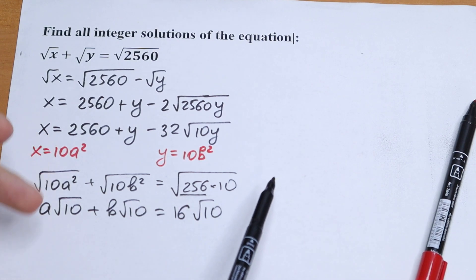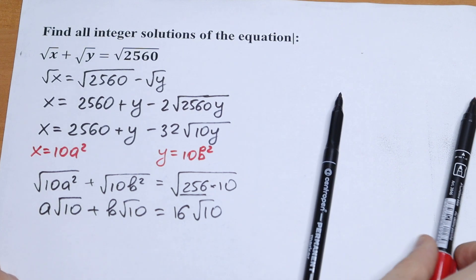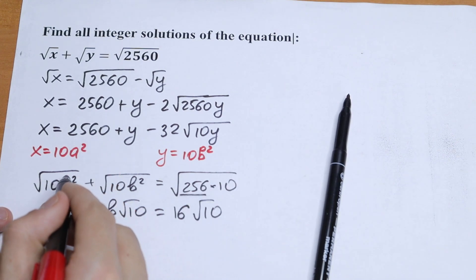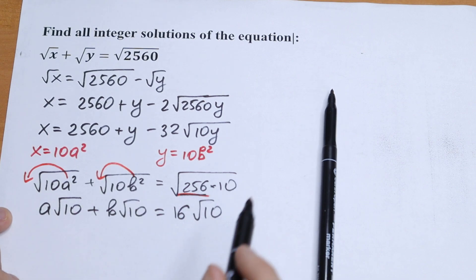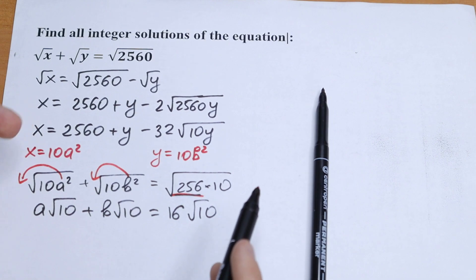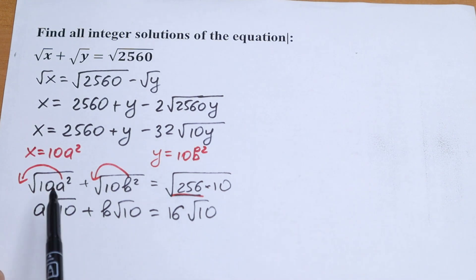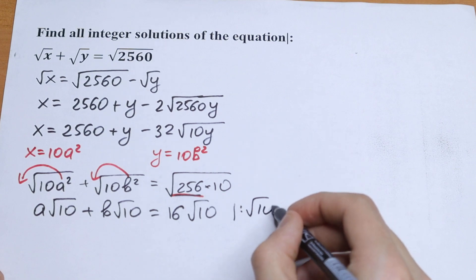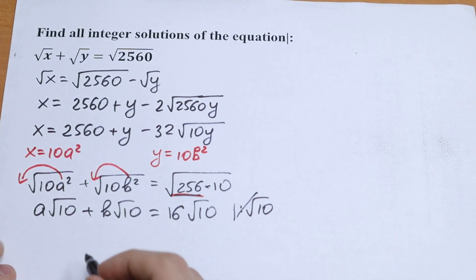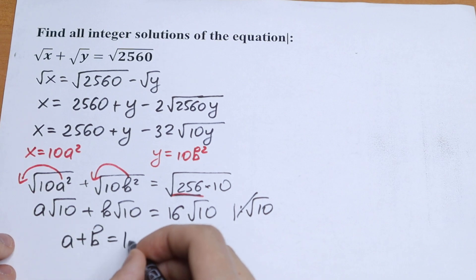After all simplifying, we have this interesting equation. We divide both sides by square root of 10, and we get that a plus b equals 16.